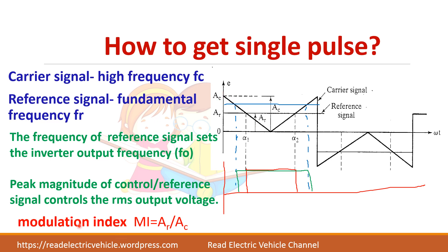The modulation index is important: if you keep increasing the magnitude of the reference wave, when it equals the carrier amplitude the modulation index becomes 1. If you increase the reference wave beyond that, there will be no intersection between the triangular wave and the square wave.